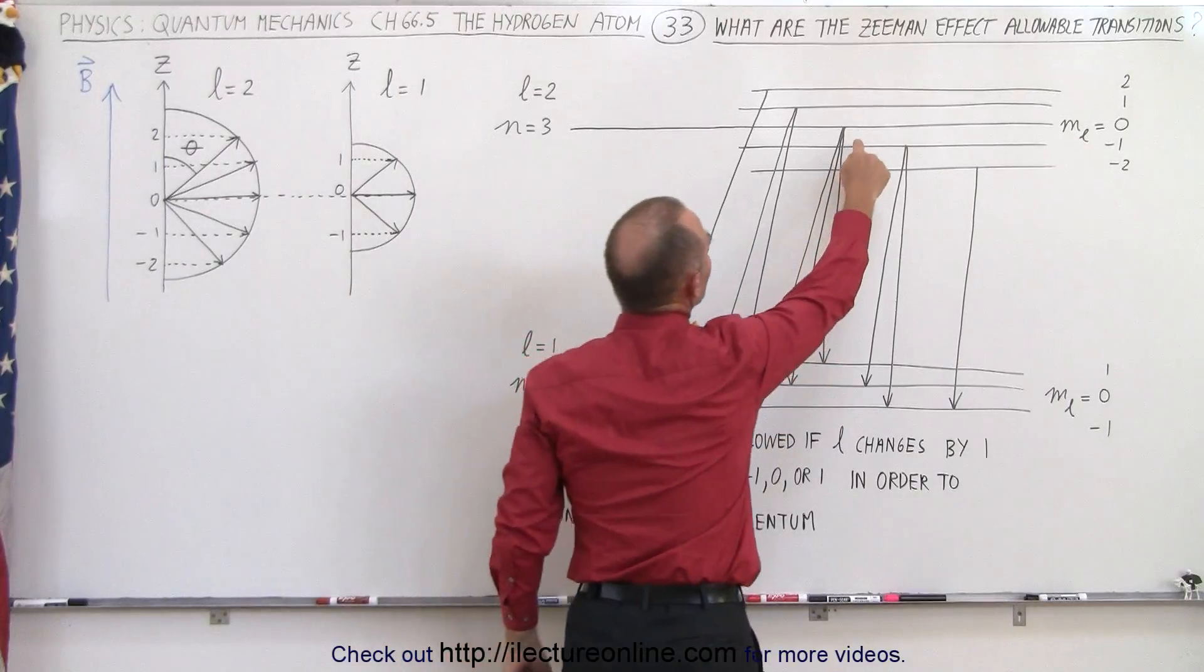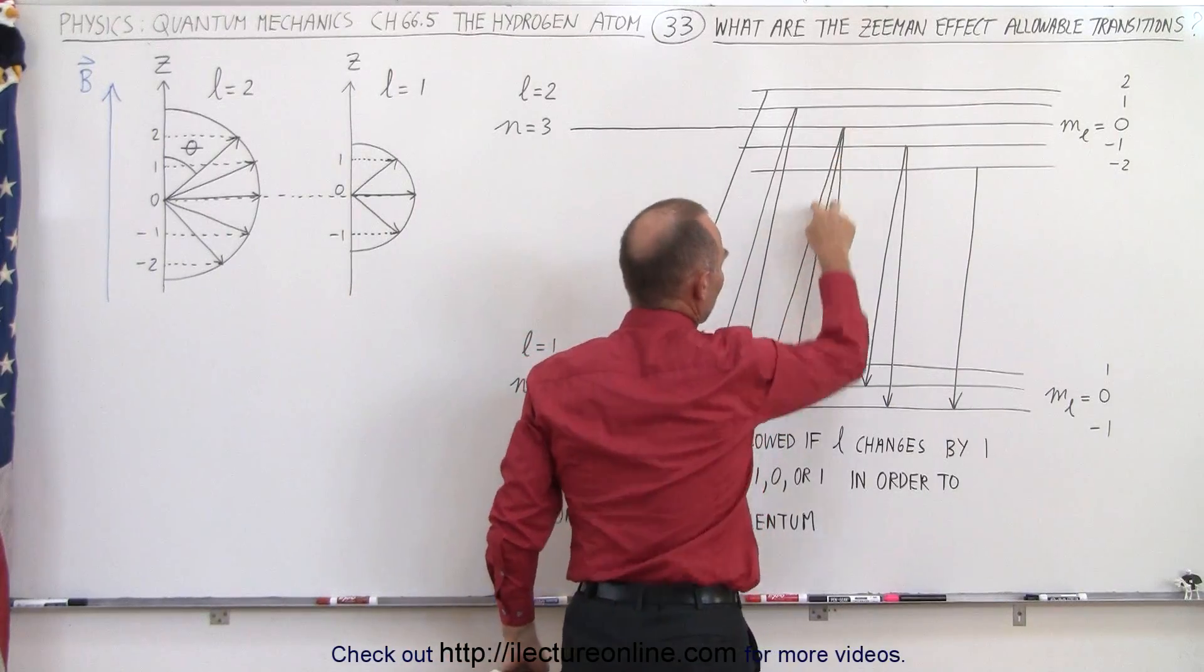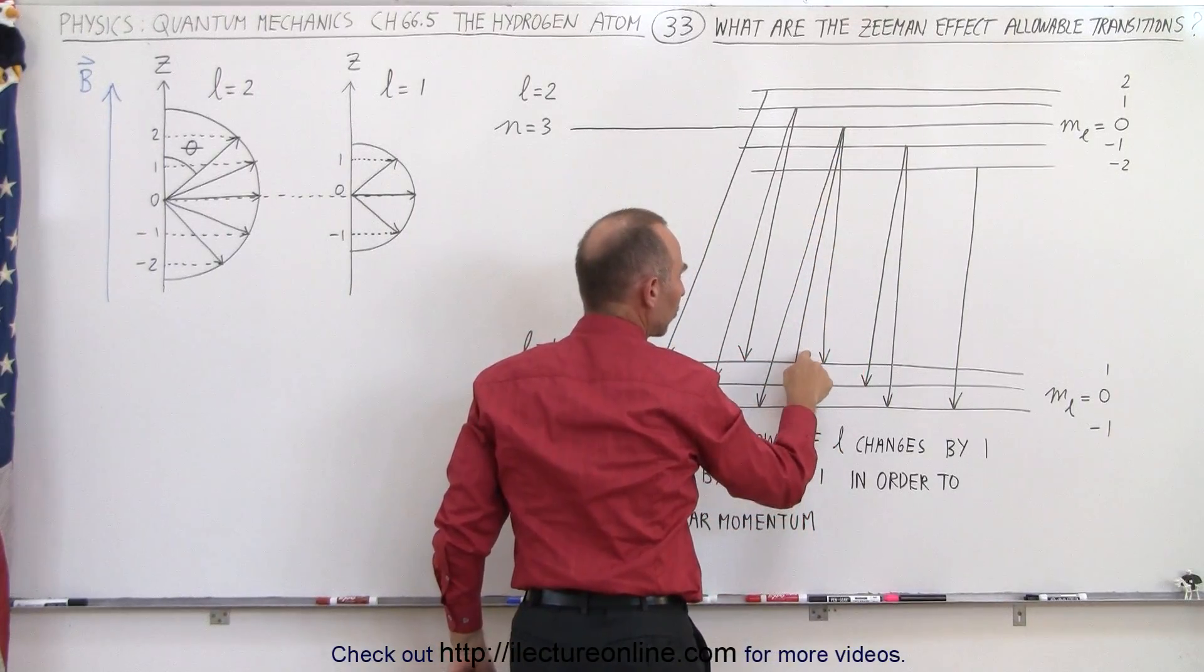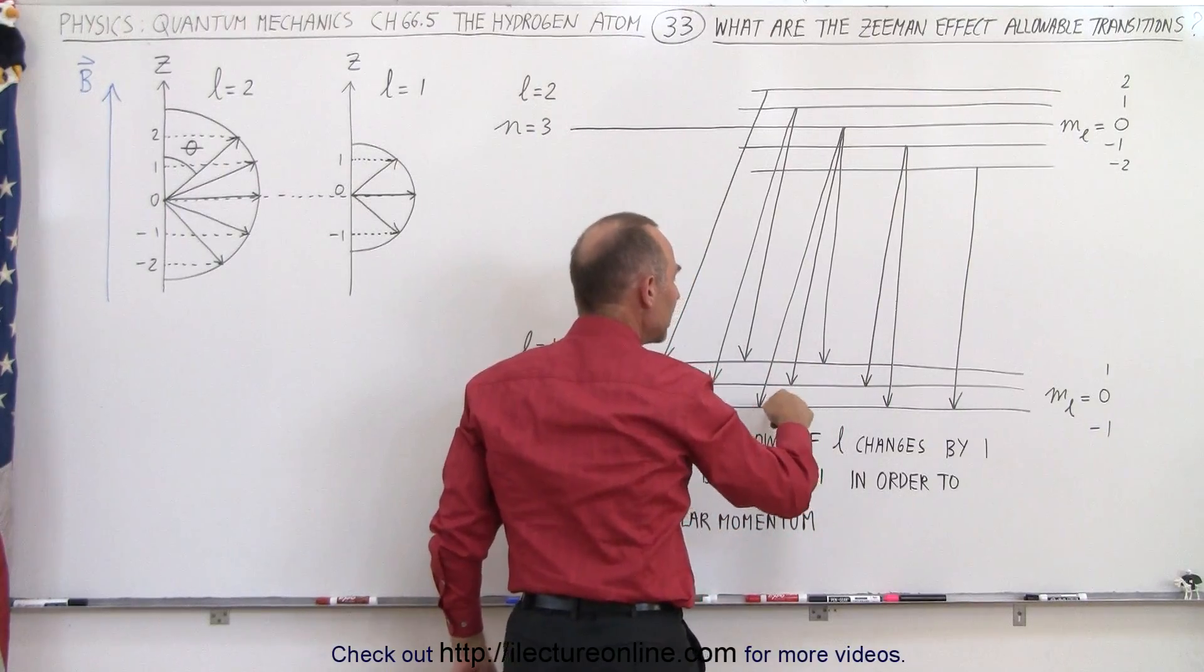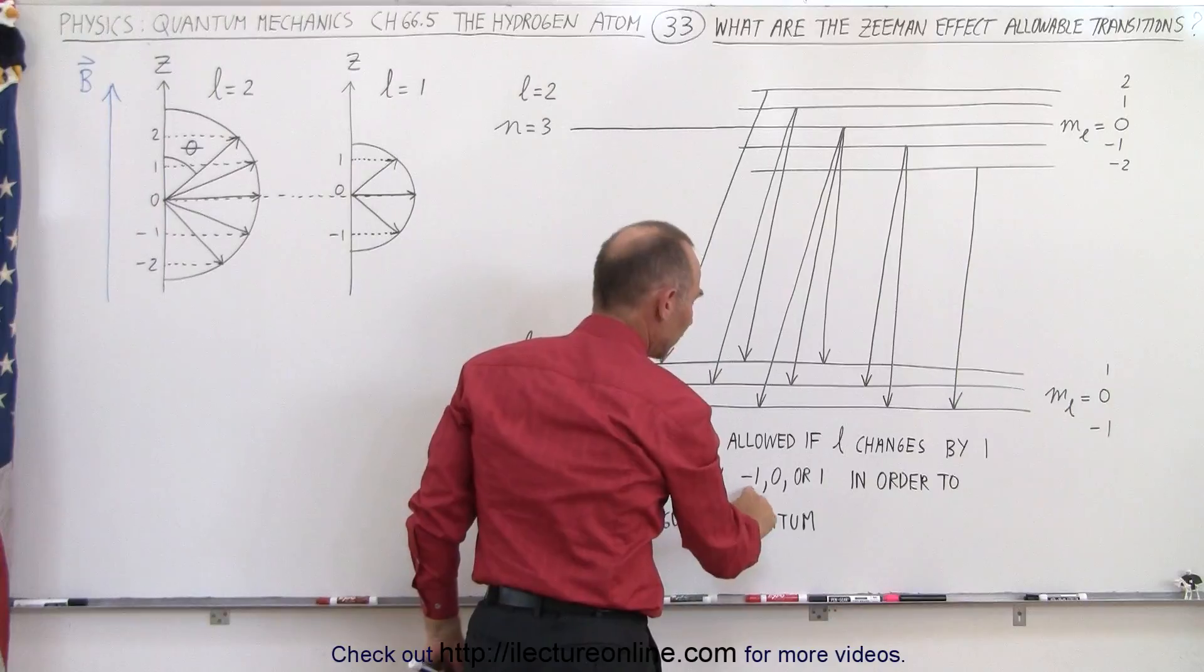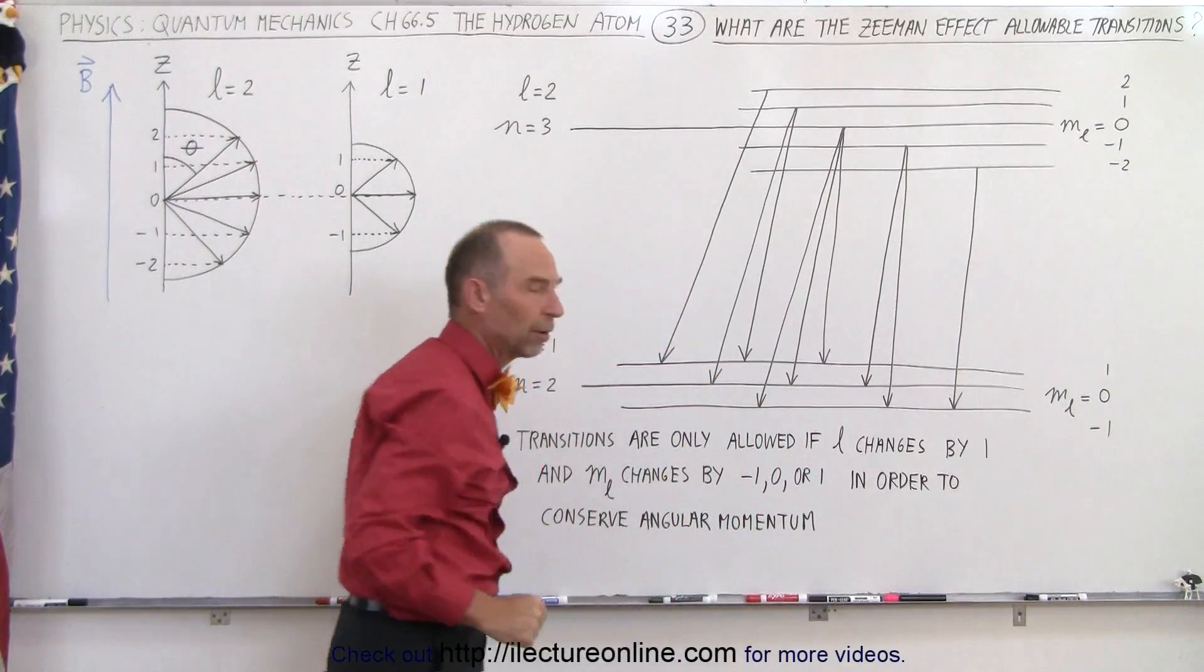When we're at the m sub l equals 0 level, now we have three possibilities. We can go to the plus 1, the 0, or the negative 1 level, because those three represent only a difference of negative 1, 0, or 1, so those three are all allowed.